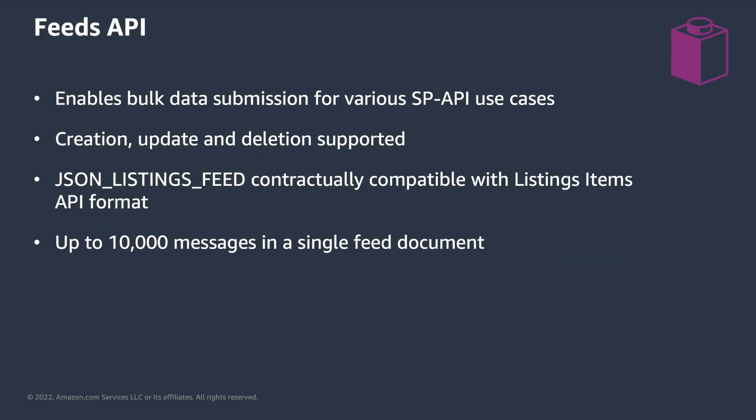The fifth API building block is the FITS API. This API is not new and also serves use cases other than Listings. But with the introduction of the Listings Items API, it was extended to support the creation, update, and deletion of Listings Items in bulk. The JSON Listing Feed, used for this purpose, is contractually compatible with the format that the Product Type Definitions API vends. So you can basically use the same schemas, but submit up to 10,000 items at once, instead of doing it one by one.